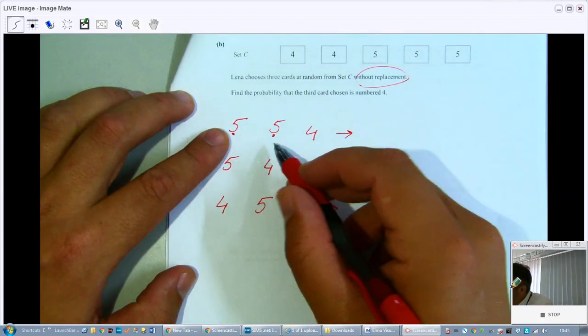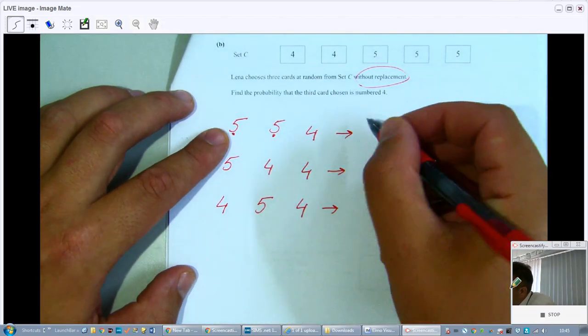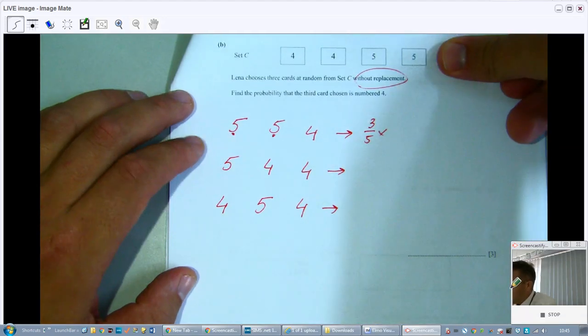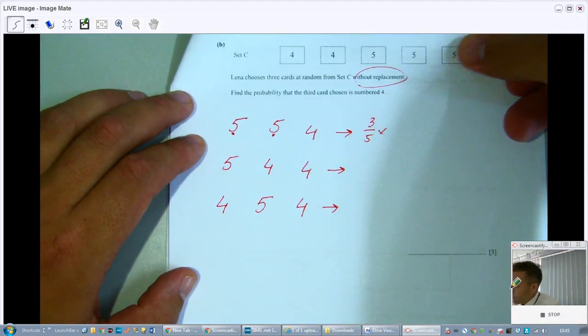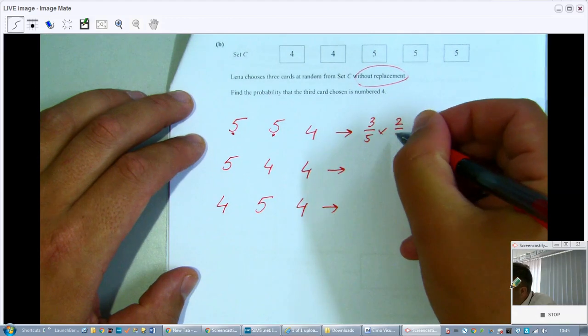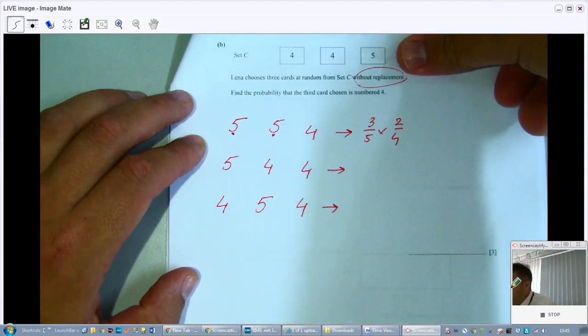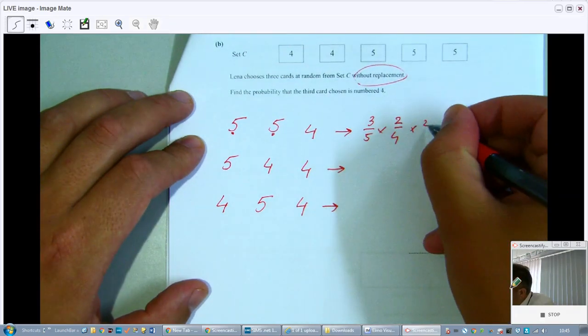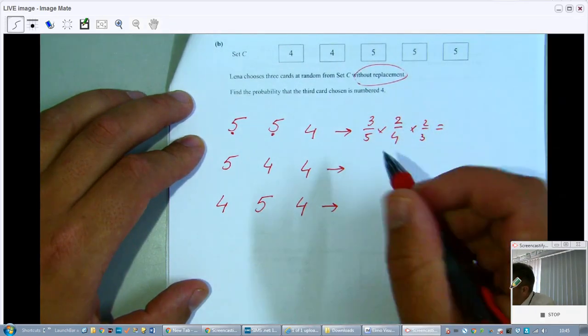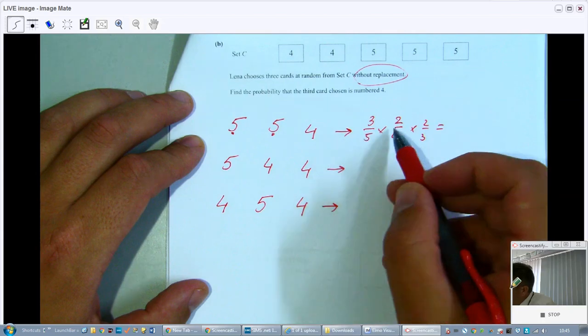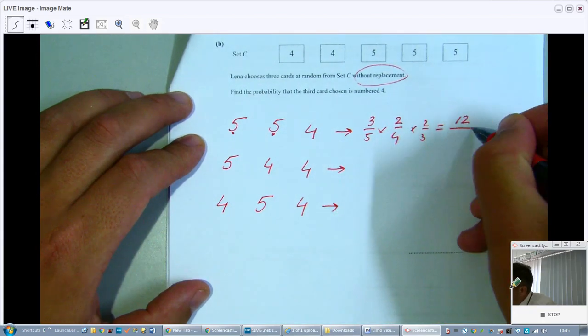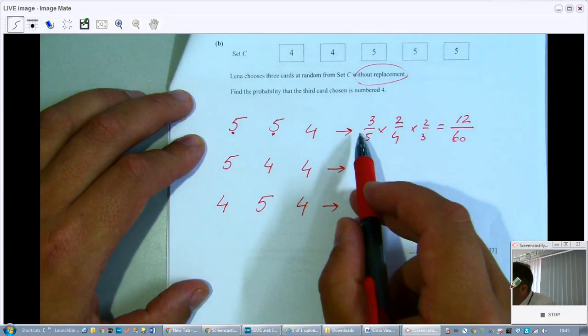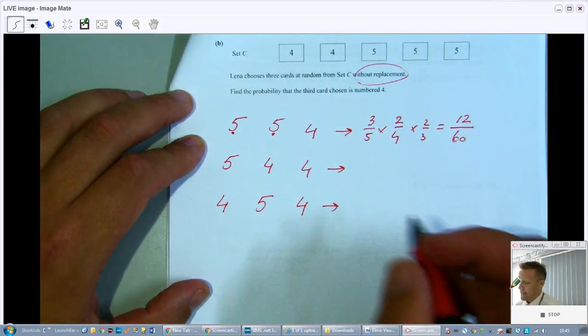So let's work out each probability separately and then we add them because all three chances are good. So a 5 and a 5 and a 4, that will be 3 out of 5 times, so one 5 is gone, 2 out of 4 times, and then a 4, 2 out of 3. And that is, let me see, 6, 12 out of 60. Is that right? You can use a calculator. I just want to make sure to make a silly mistake. 12 out of 60. Yeah, that's correct.